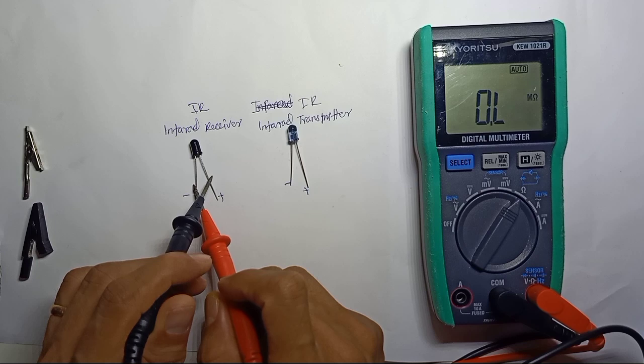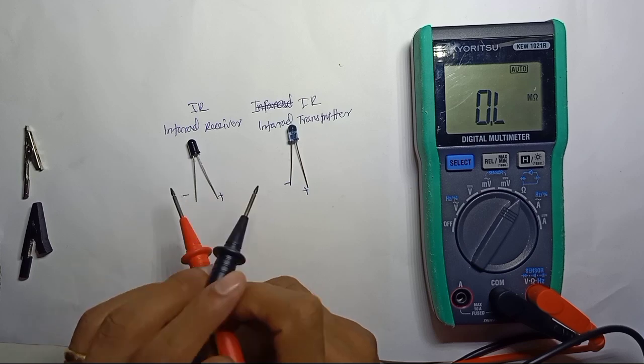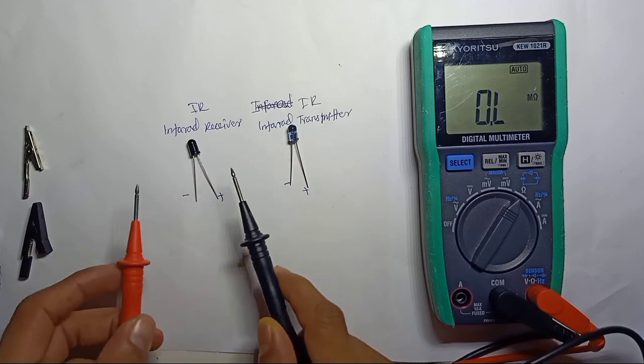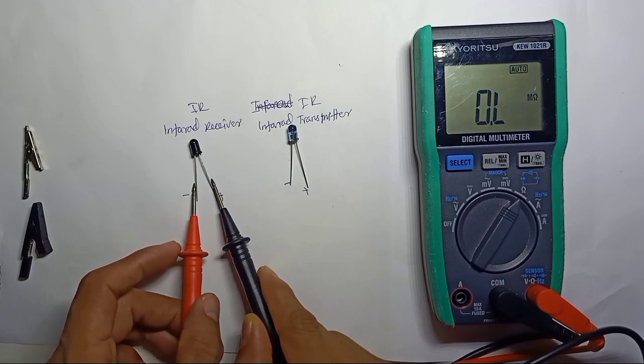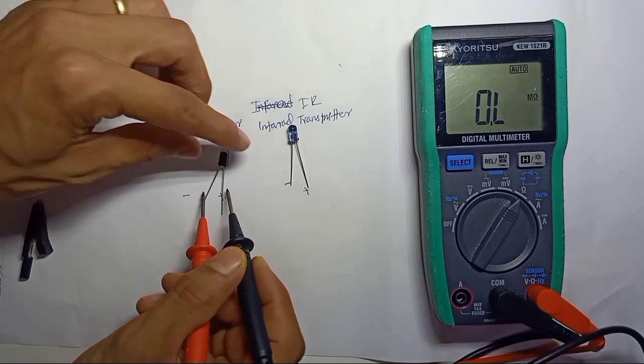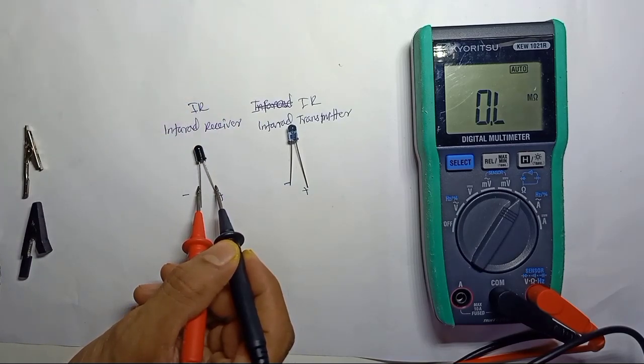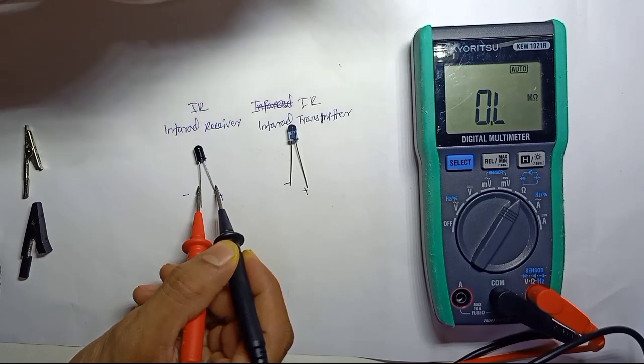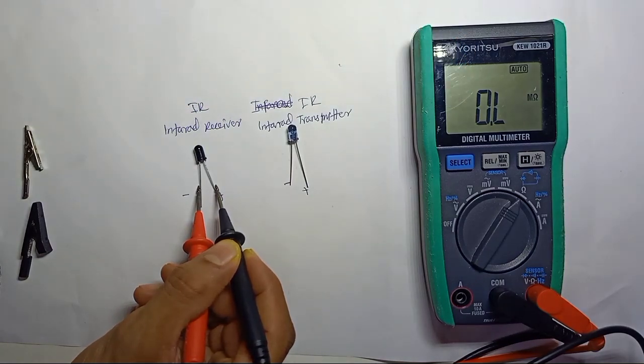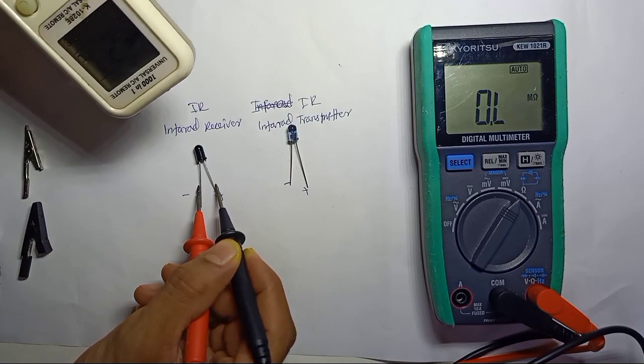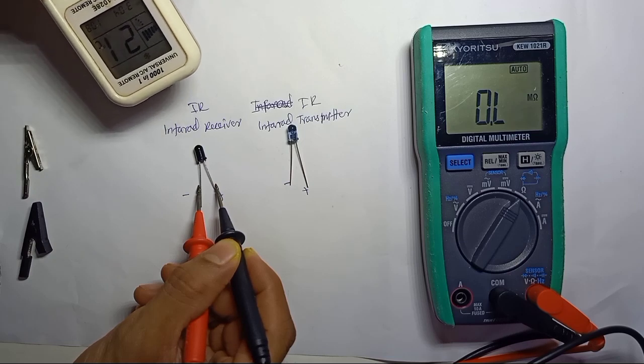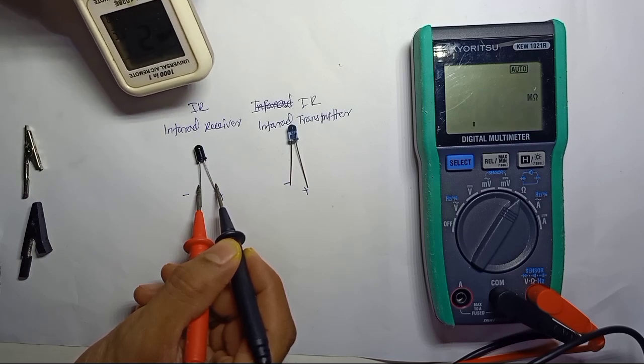We shouldn't get any value in this position - we should not have any output. Now we have zero on the multimeter. By this time, you can take any remote control and transmit.